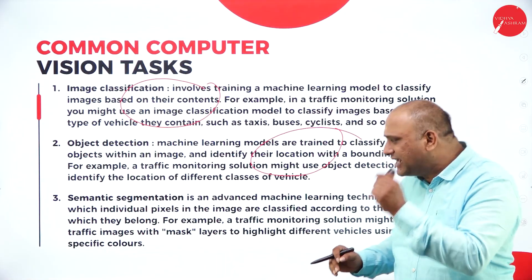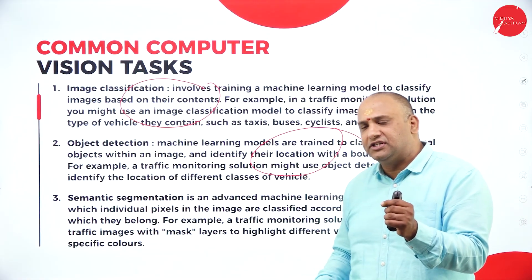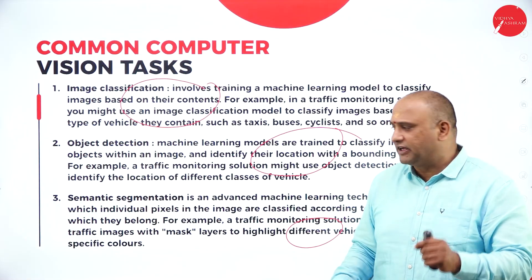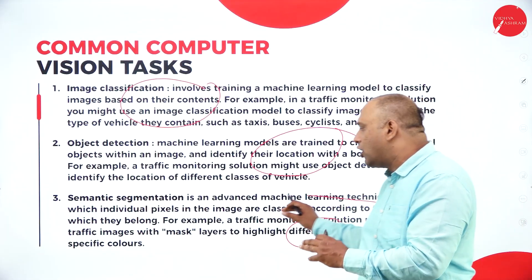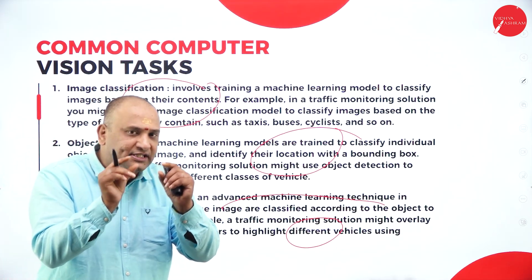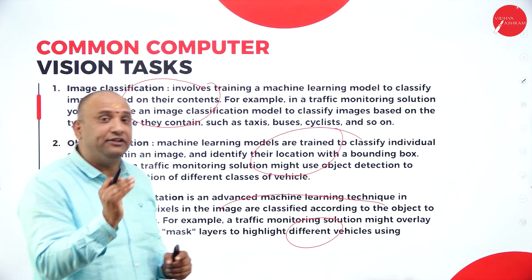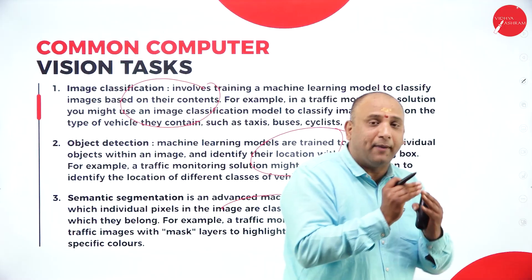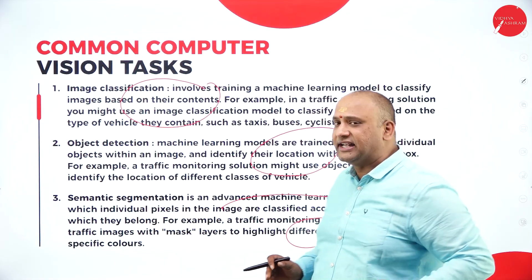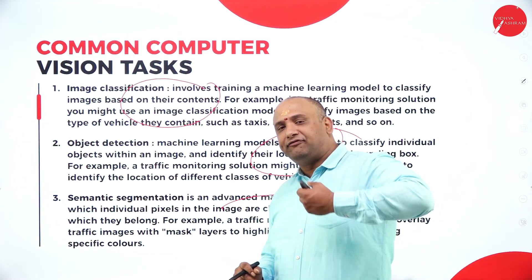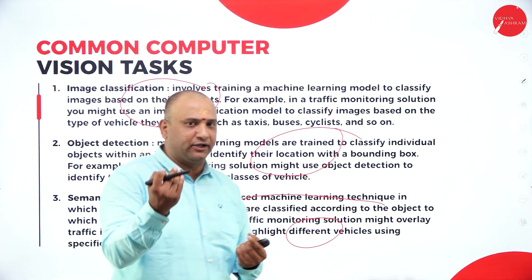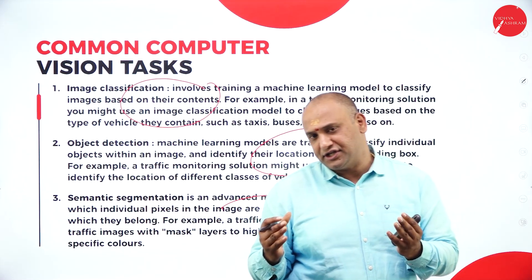Next is semantic segmentation. The word semantic is about using mask layers to highlight different vehicles using specific colors — images are classified according to the objects they belong to, grouping them into closely related categories. For instance, I could count the number of SUVs passing through a particular signal in the streets of Mysore or Bangalore. Similarly, I can identify the movement of two-wheelers on a particular highway using semantic classification.